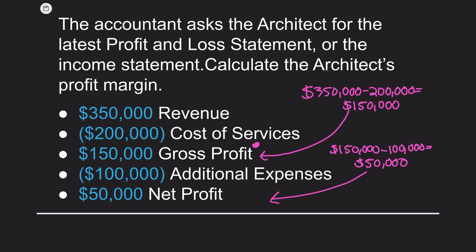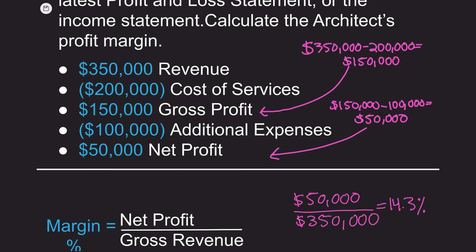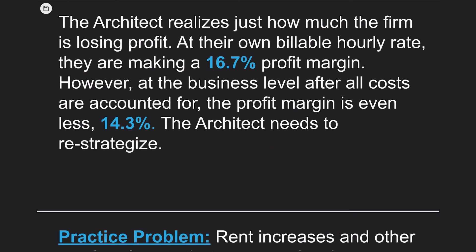So the question remains: what is the firm's profit margin? Using the same margin formula, take the net profit of $50,000 divided by gross revenue of $350,000, which equals 14.3%. This means that for every dollar charged to the client, roughly 14 cents of profit is generated for the firm. Per the Architect's Handbook of Professional Practice, the minimum target profit margin should be 20% or higher — so this firm is losing money. To summarize, at their own billable hourly rate the architect is making a 16.7% profit margin, but at the business level, after all costs are accounted for, the profit margin is even less: 14.3%. The architect needs to strategize.